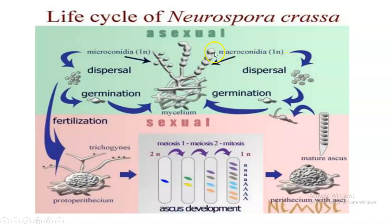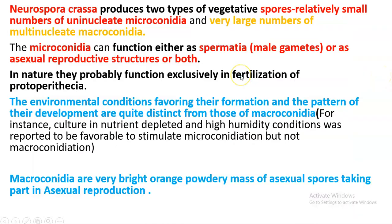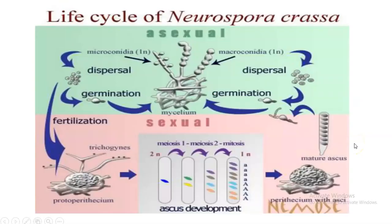Macroconidia will be large in number and large in size — they take part normally in asexual reproduction only, germinating and forming a new thallus. You might be wondering why these two types of spores are formed in this particular conidiophore. Because at different environmental conditions, either macroconidia or microconidia will be formed. For example, in laboratory conditions, in a culture with nutrient-depleted medium — if there are no sufficient nutrients and there is high humidity — there will be formation of microconidia and not macroconidia. That point you can also remember. This is about asexual reproduction.